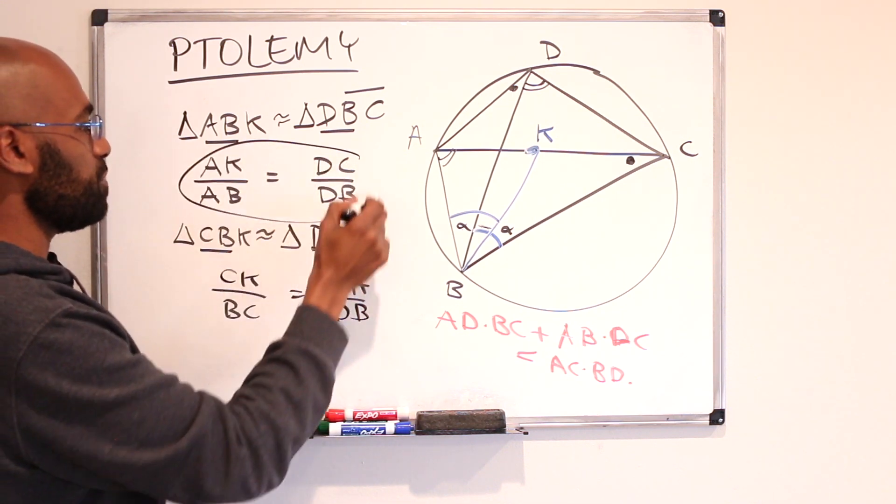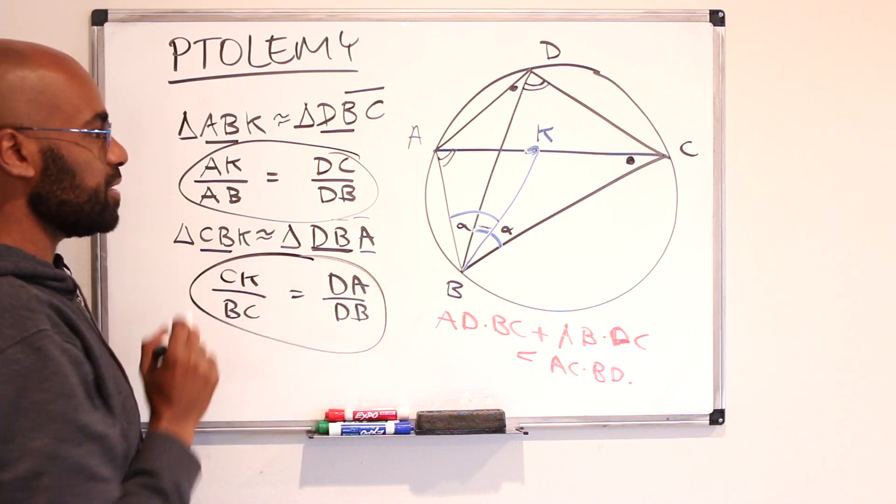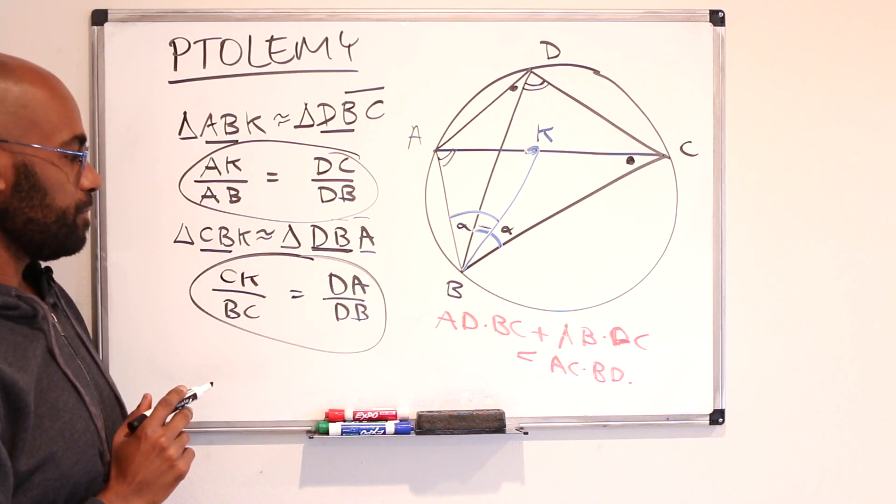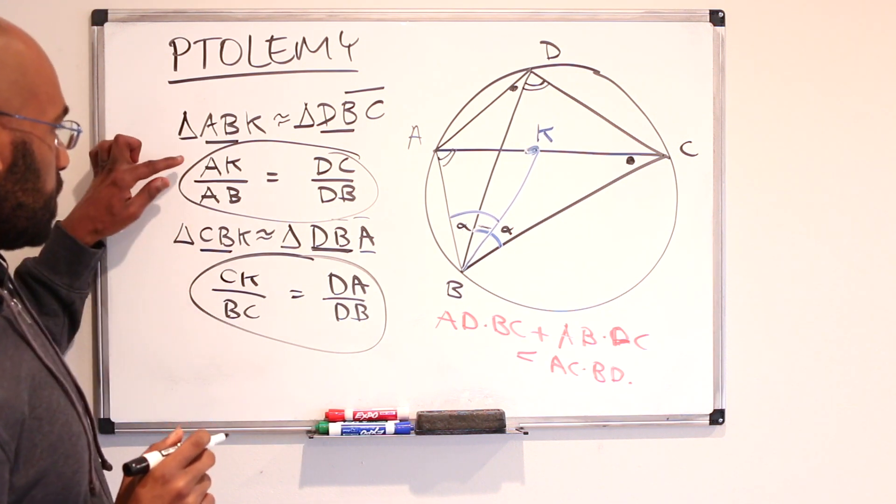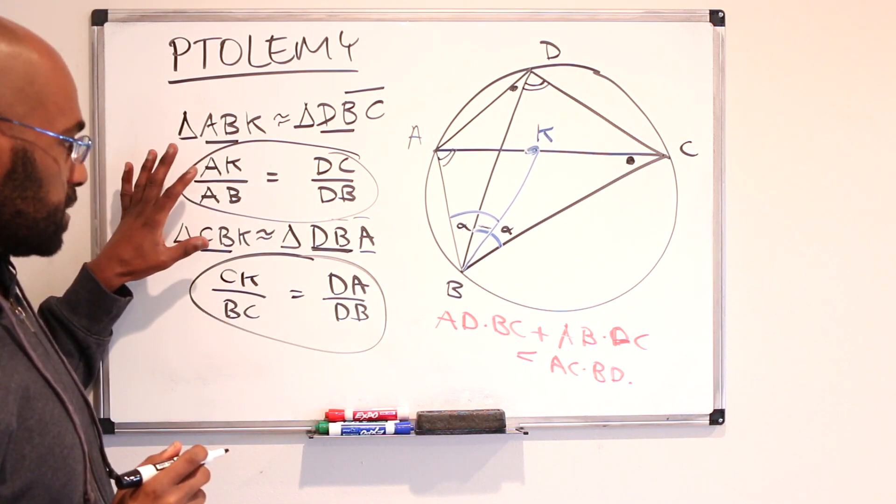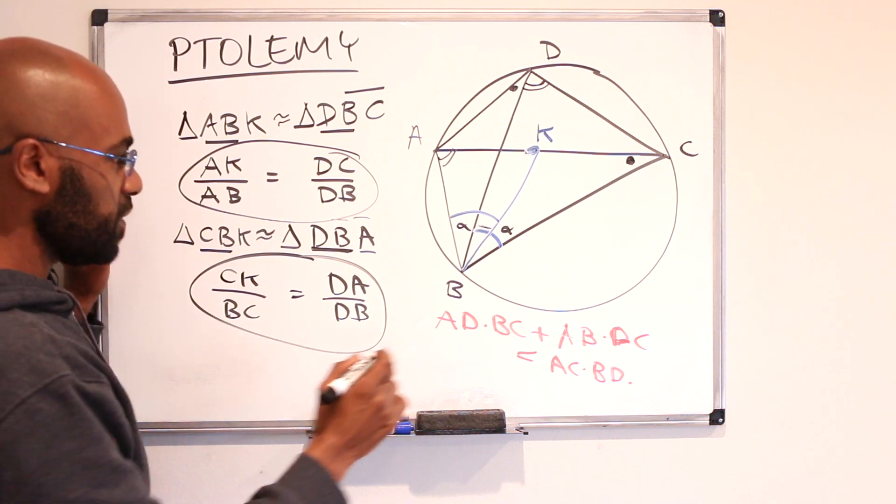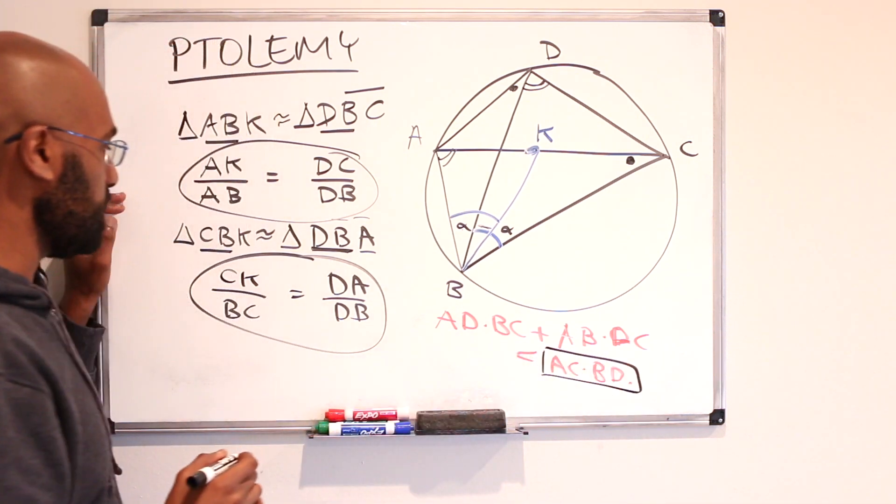All right so here are the two expressions that we have from the similar triangles that we've drawn. So what does that tell us? Well you can notice we can rearrange things a little bit. The thing we're finding an expression of is AC times BD.